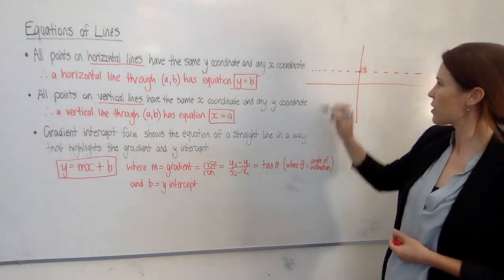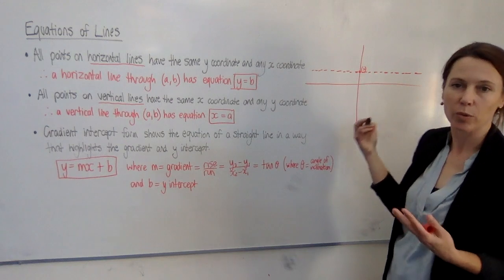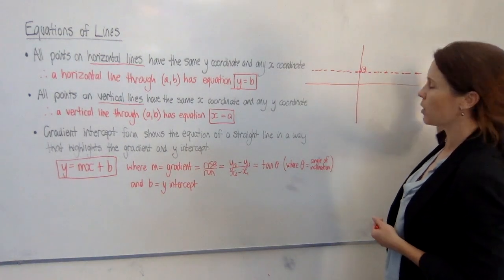Then we know that every single y-coordinate of all of the points on there are 2. We'd have (1,2), (2,2), (3,2), (4,2), and everything in between.